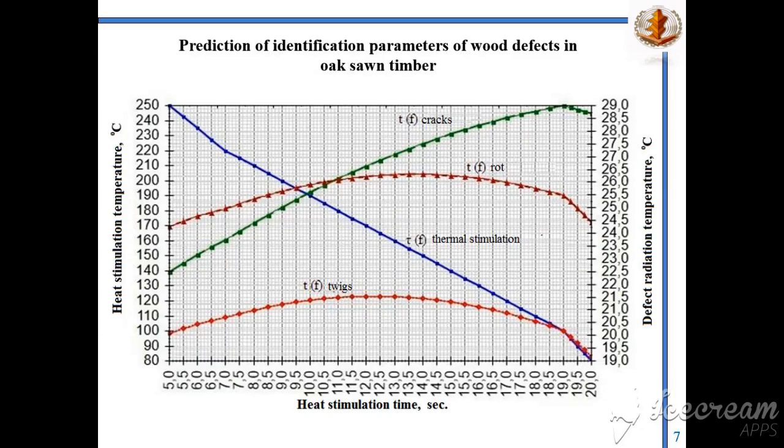Based on the regression dependences of the reflection of the main variety-producing defects, a scale for determining the time of thermal stimulation and the temperature of radiation of wood defects was constructed in the Statistica advanced quality control environment, depending on the change in the temperature parameter of thermal stimulation for each of the investigated main varietal flaws in oak wood in sawn timber.